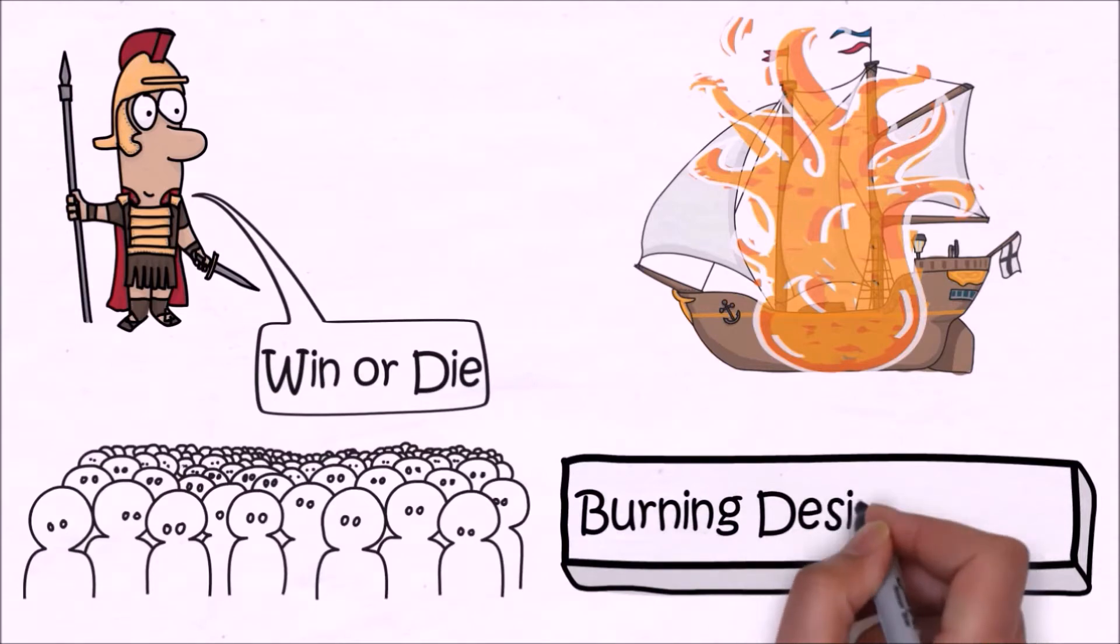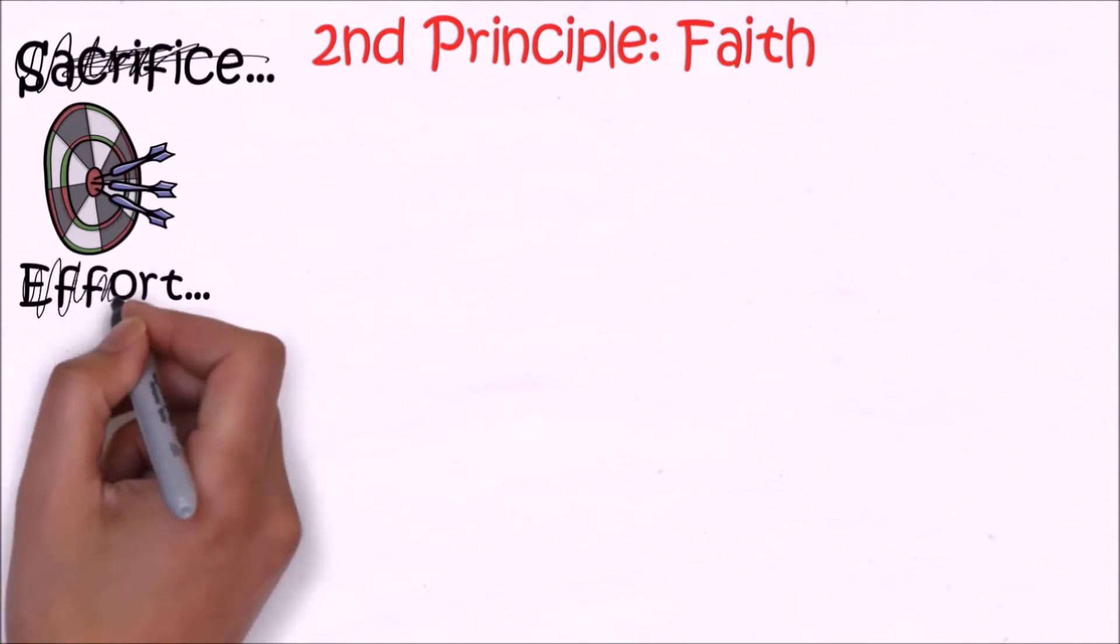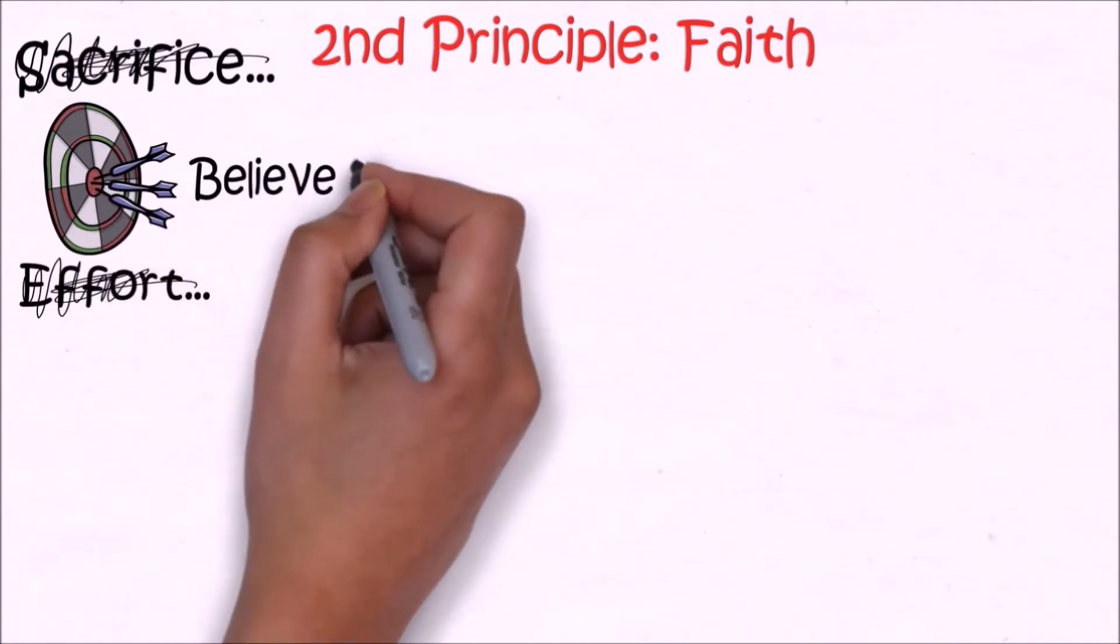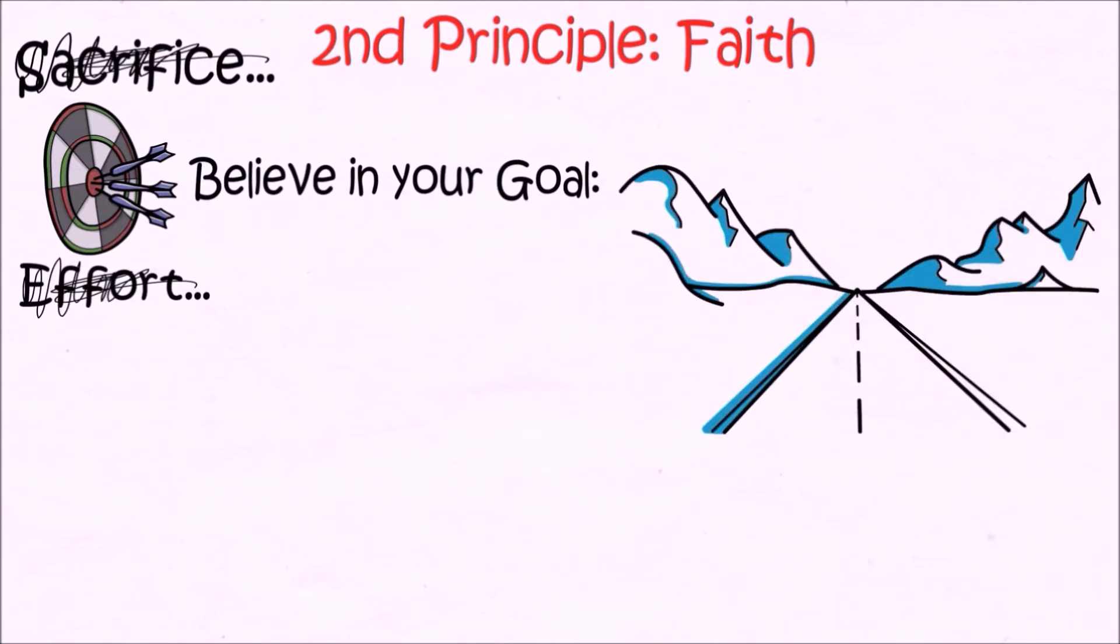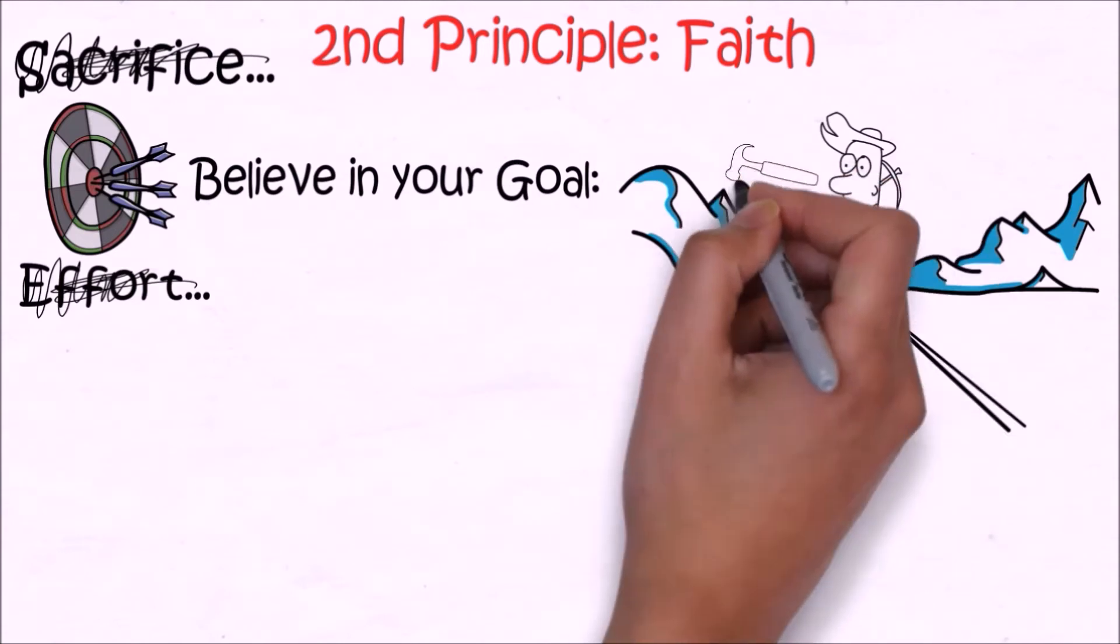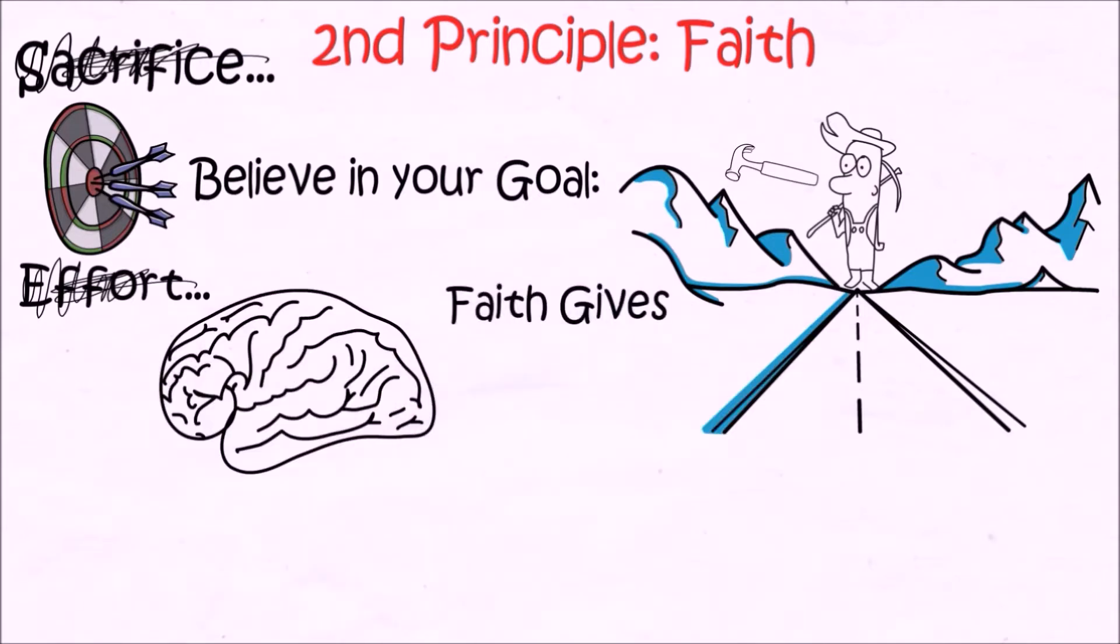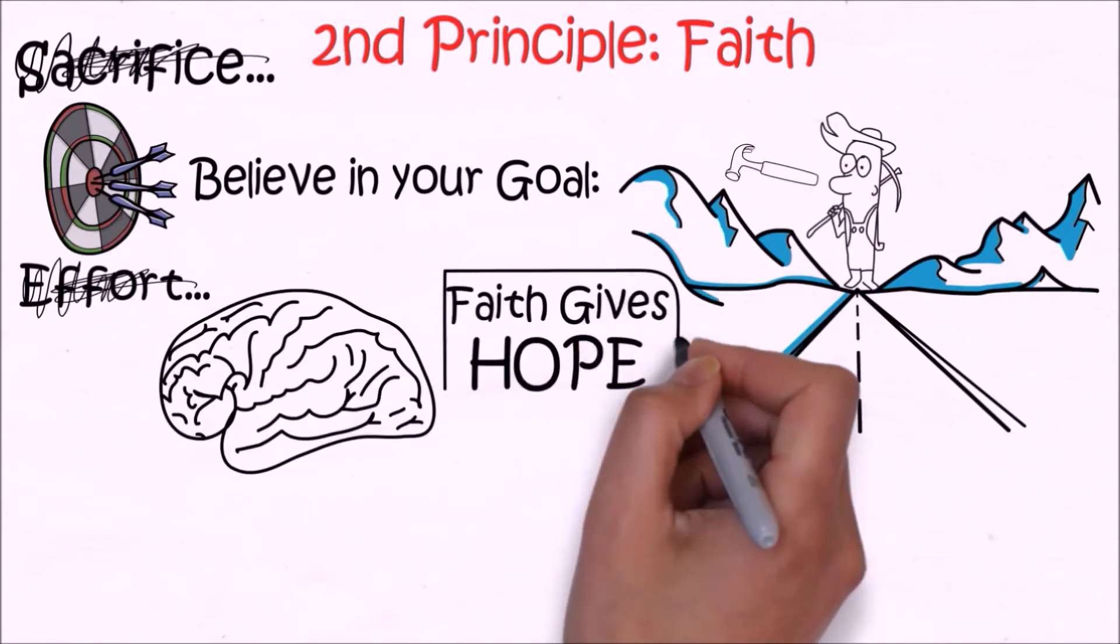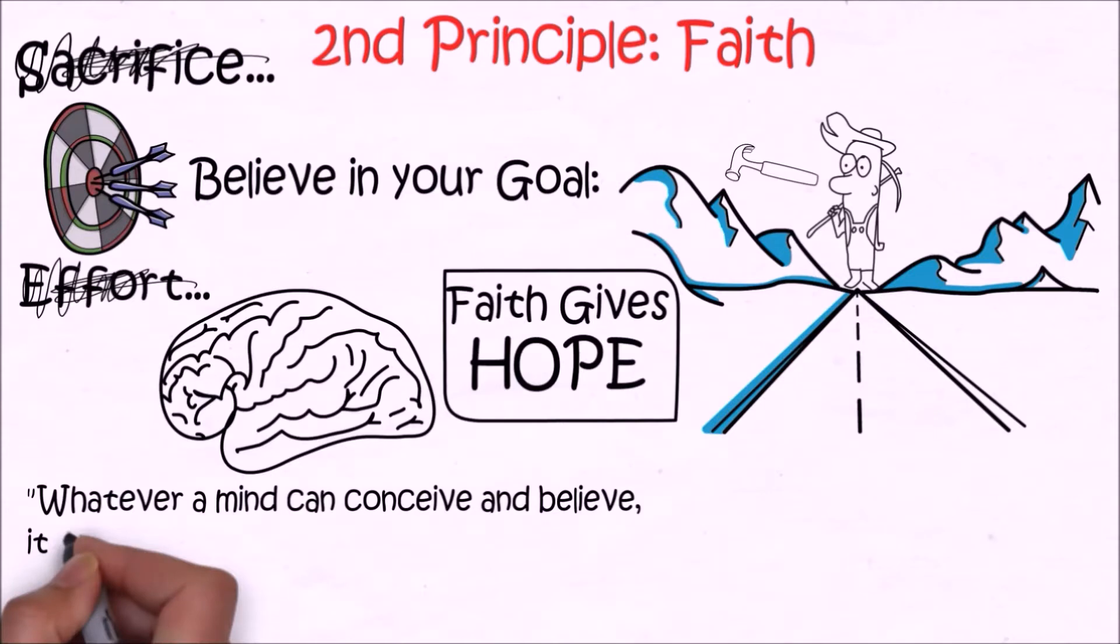The second principle is faith. Do you believe in your goal? Because if you don't, you will not be able to make it happen. You will not want to make sacrifices or any effort. So you've got to have faith in your goal. People say faith can move the highest mountain. Well, in reality it might not actually move the mountain, but it will certainly give you the willpower and courage to start chipping away that mountain. Faith keeps us going when there is nothing to start with, when we are deep down in the deepest valley of life. Hill says whatever a mind can conceive and believe, it can achieve.